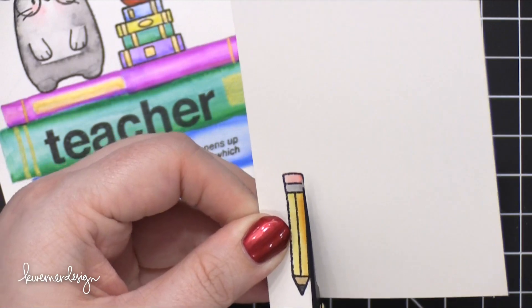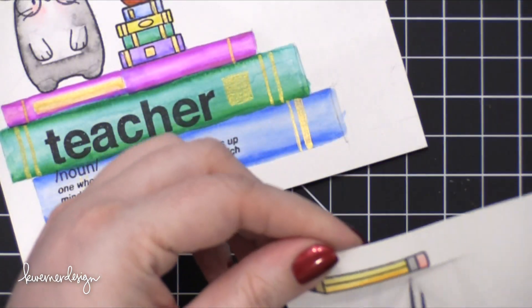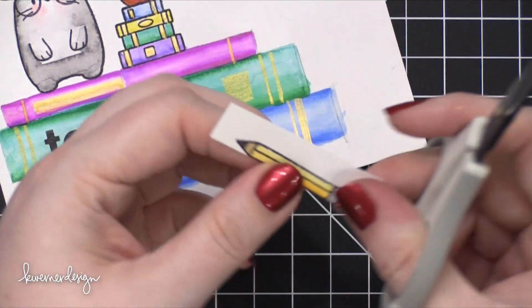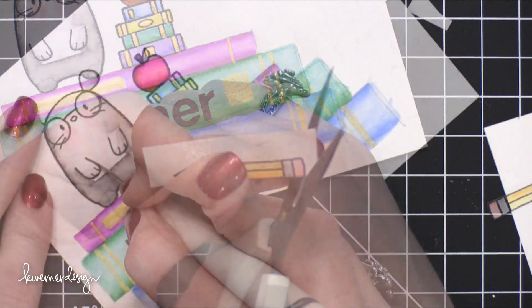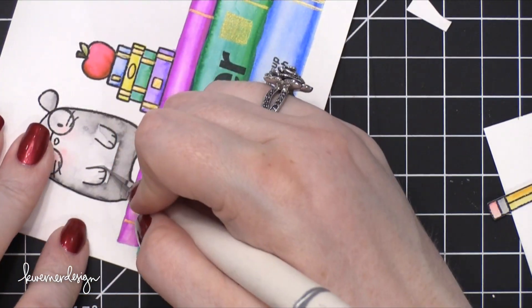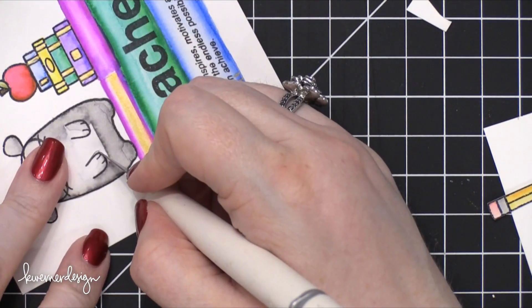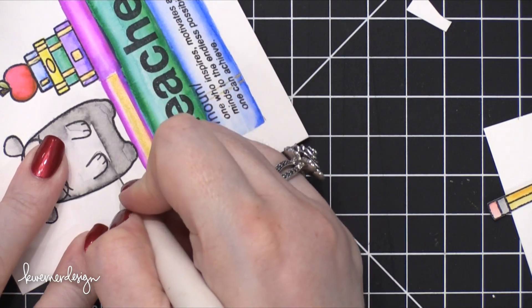So now it's time to start assembling the pencil area of this scene, so I trimmed out the pencil stamp that I colored earlier, and I also took an X-Acto knife and very carefully went around the arms of this mouse.